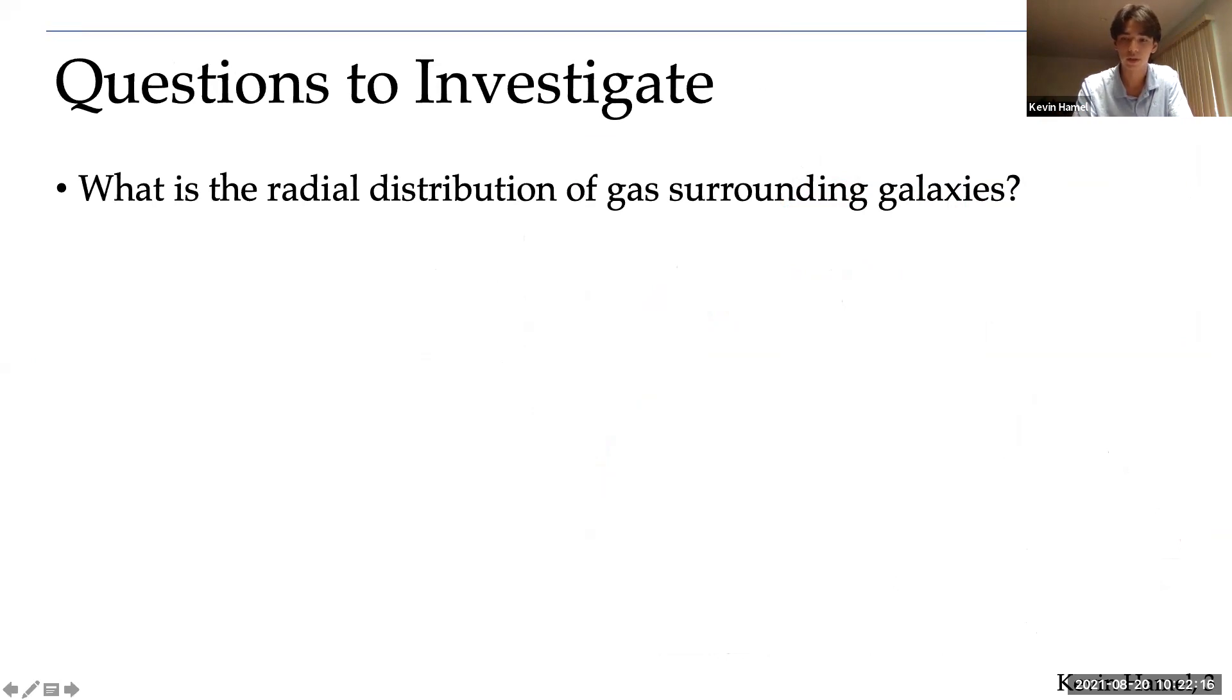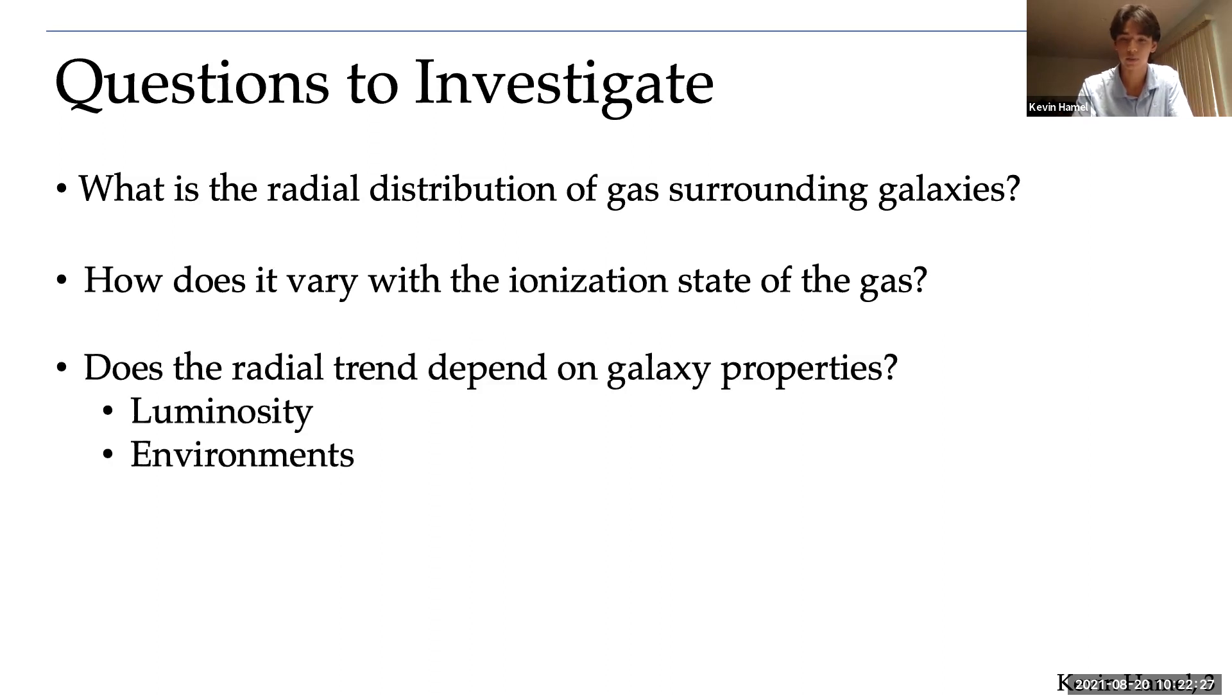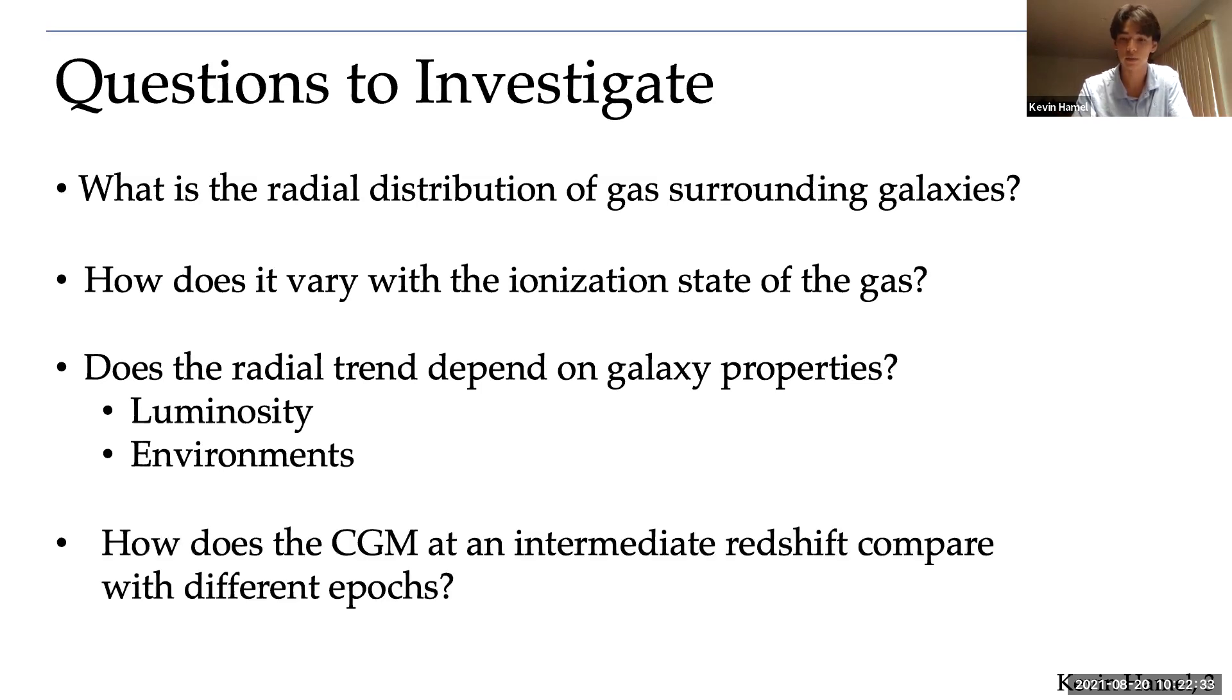So these are some of the questions that we thought of investigating this summer. First, we want to know what the radial distribution of gas surrounding galaxies is, and does it vary with the ionization state of the gas? Does the radial trend depend on galaxy properties, such as luminosity or galaxy environments? And finally, how does the CGM at an intermediate redshift compare with different epochs?